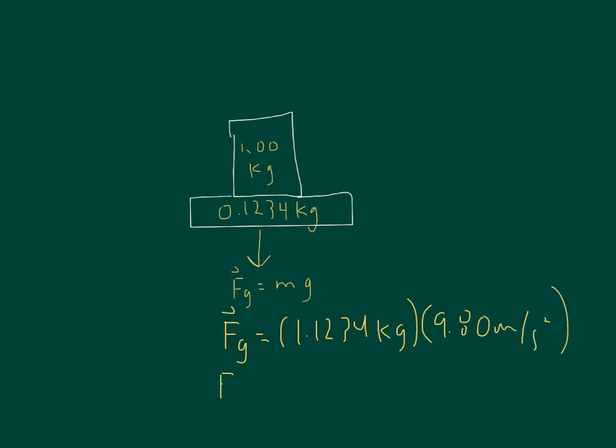So we get a weight, or an Fg, of 11.01 newtons. We can put a negative in front just for direction, but we're just looking for how to calculate this.